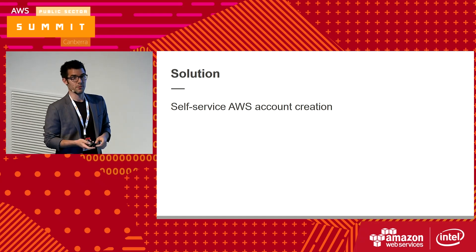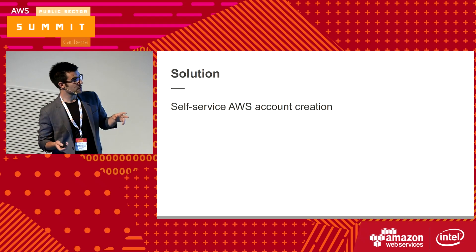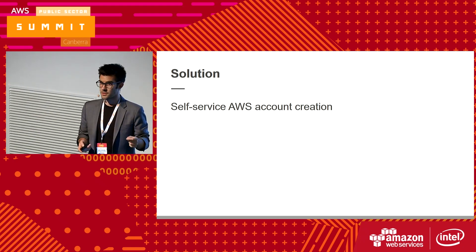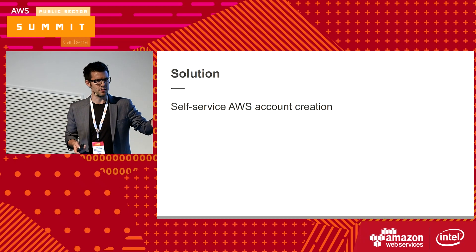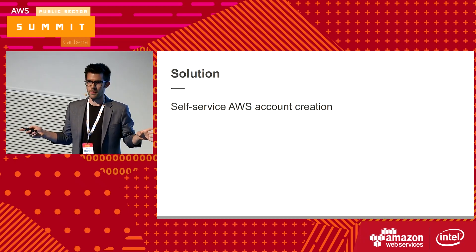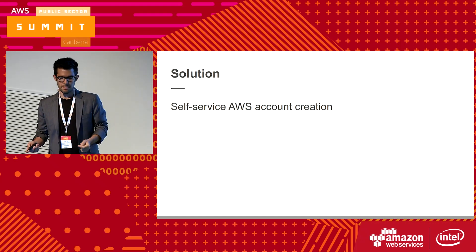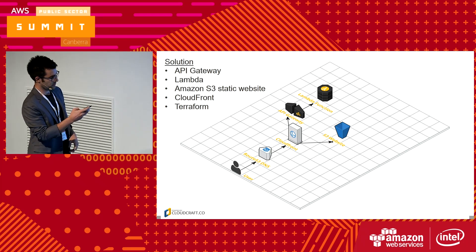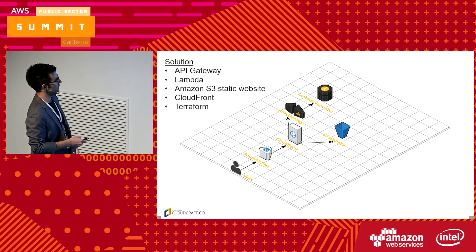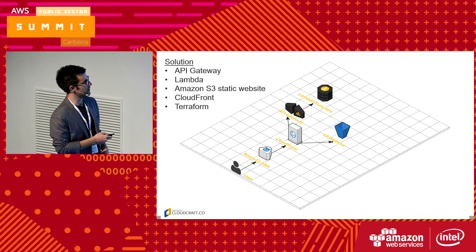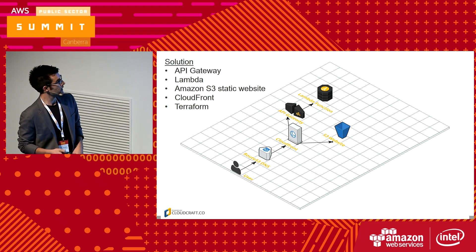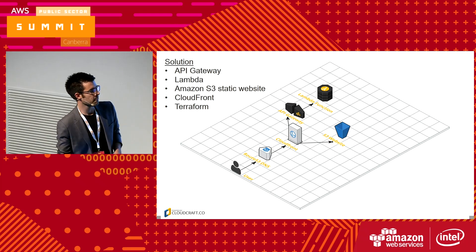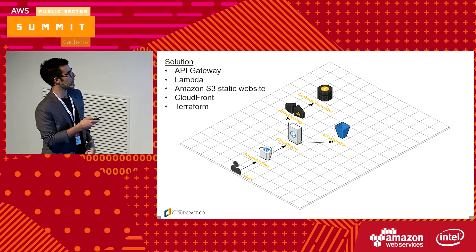So our solution is self-service AWS account creation. Just for full disclosure, it's not fully self-service yet — we're still waiting on SSO on the S3 website, so we're doing that without connecting our IDP to Cognito. But the entire rest of the process is fully automated; it just needs one of us from the cloud team to kick it off. So what does it look like? Our solution involves a user hitting the Route 53 DNS. Route 53 directs them to the CloudFront distribution, and then CloudFront directs them to the S3 website. The S3 website is what has the form. They enter all their details in the form, and the form hits the API Gateway, which invokes a Lambda function.